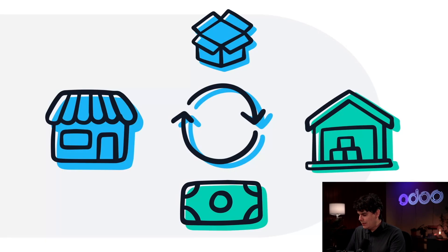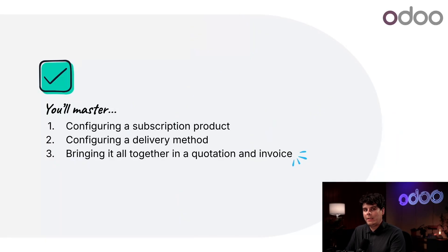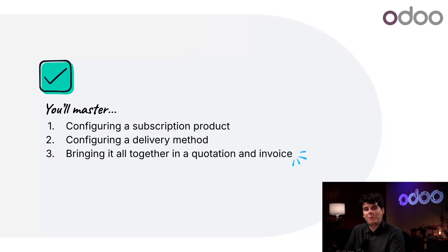Stealthy Stems, a wholly owned subsidiary of Stealthy Wood. Now to turn Stealthy Stems from one man's dream into an international flower delivery empire, there are a few steps we have to take care of first. We're going to need to set up our database for subscriptions and deliveries, create a subscription product, choose our delivery method, and finally create a subscription quotation.